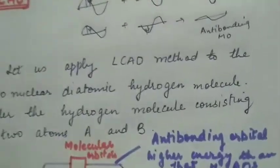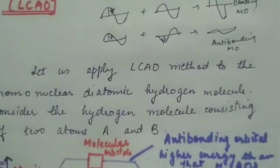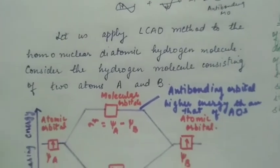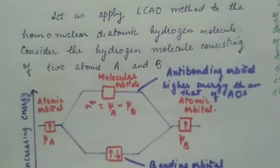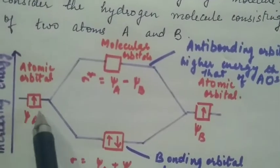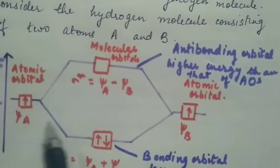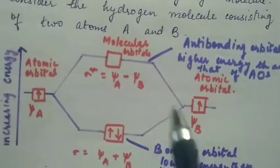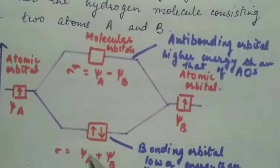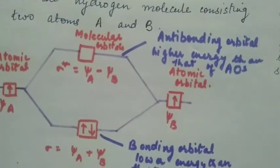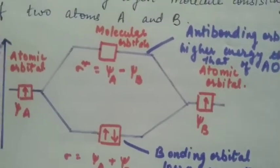Let us apply this method to homonuclear diatomic hydrogen molecules. Consider the hydrogen molecule consisting of two atoms A and B. The orbitals on the sides are the atomic orbitals. When they combine with each other in a linear manner, they will form molecular orbitals which are shown in the center.